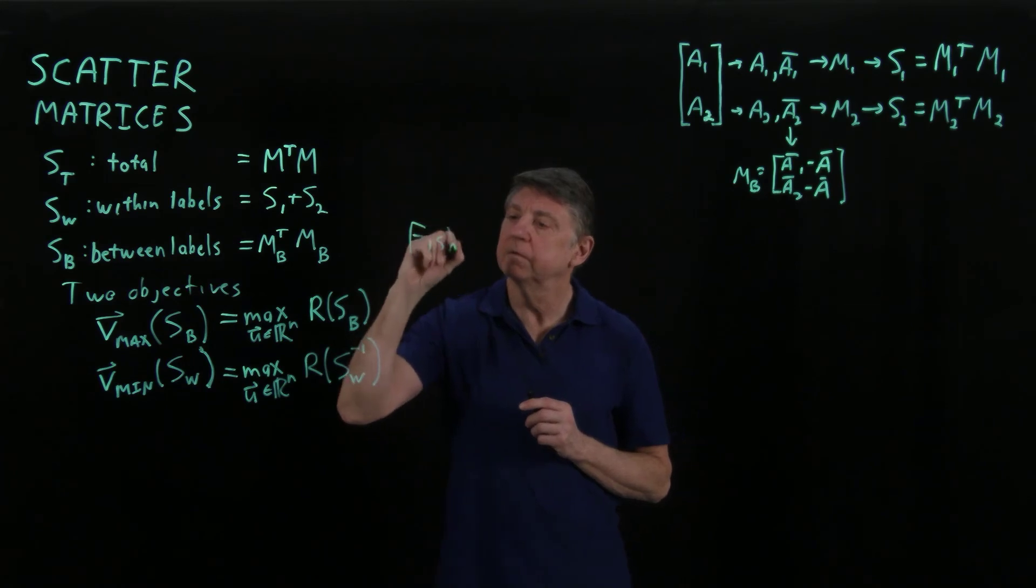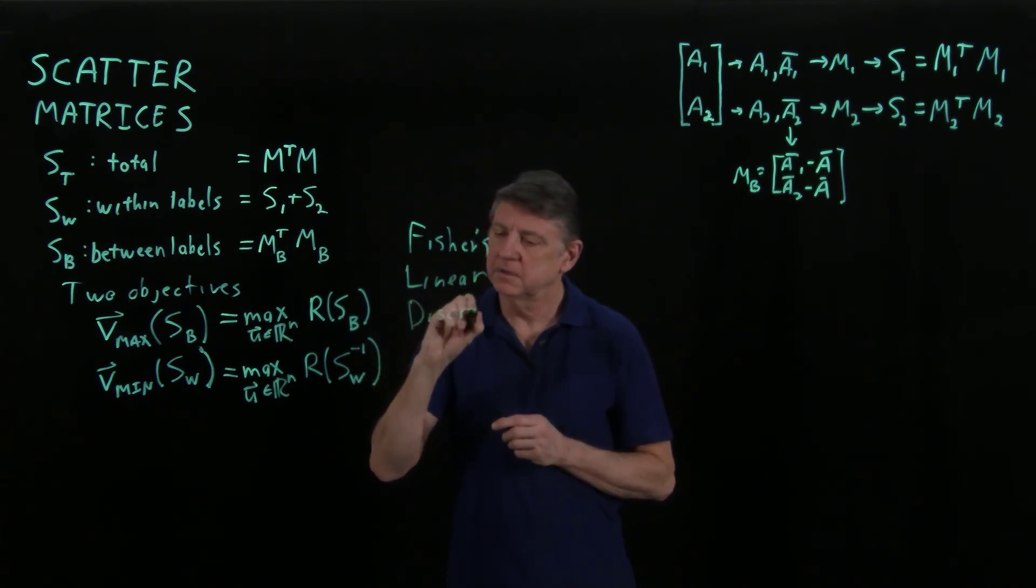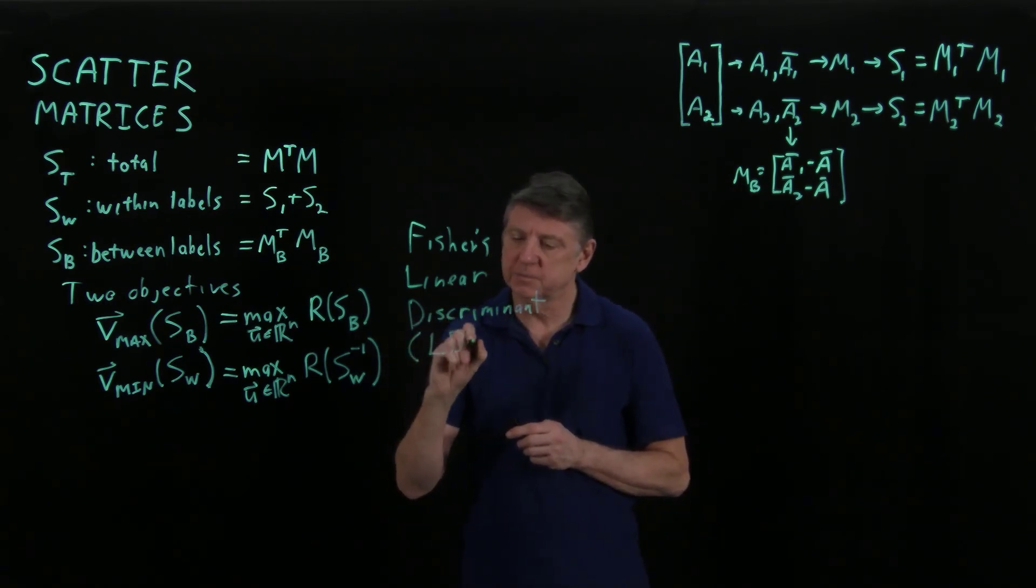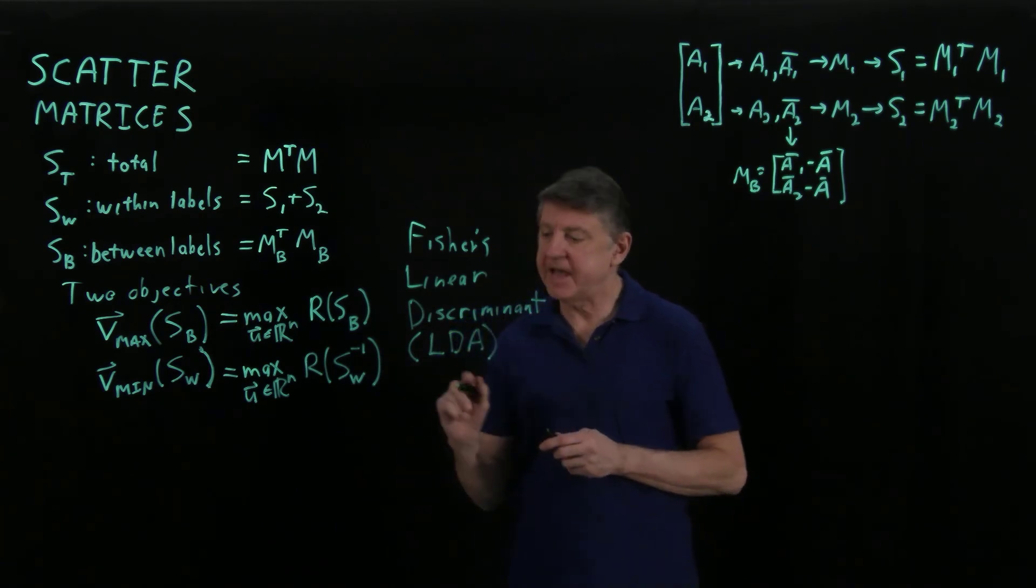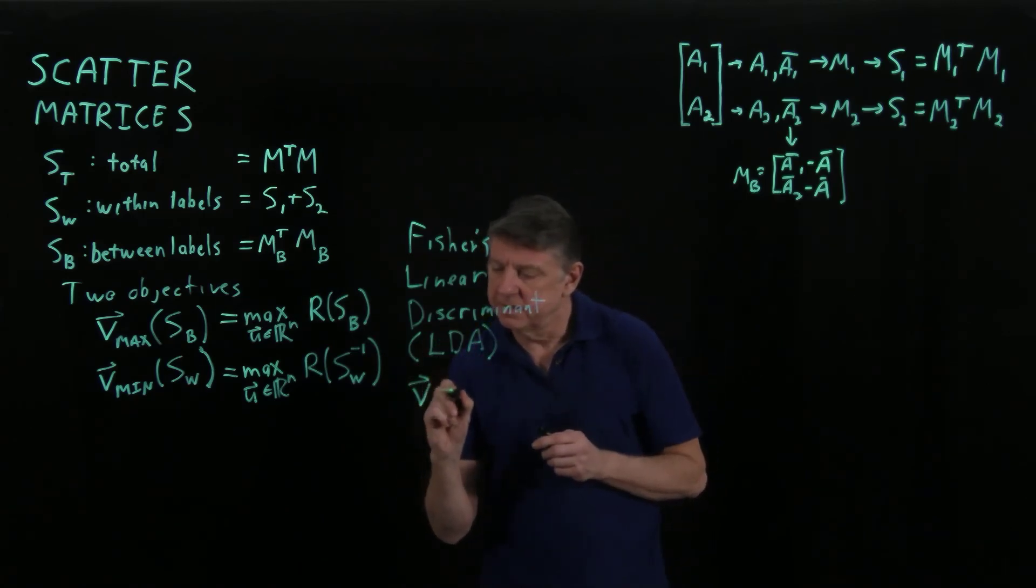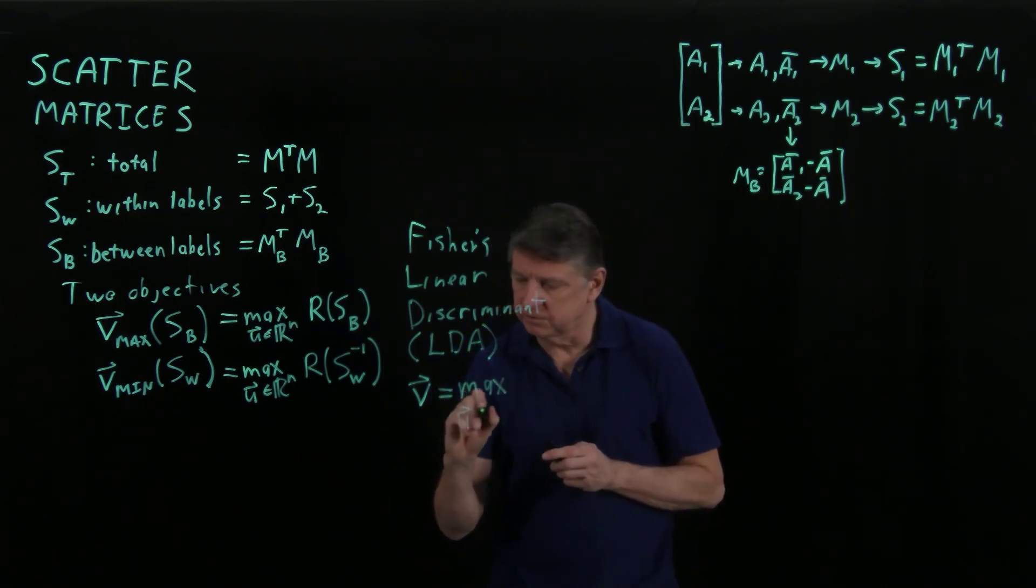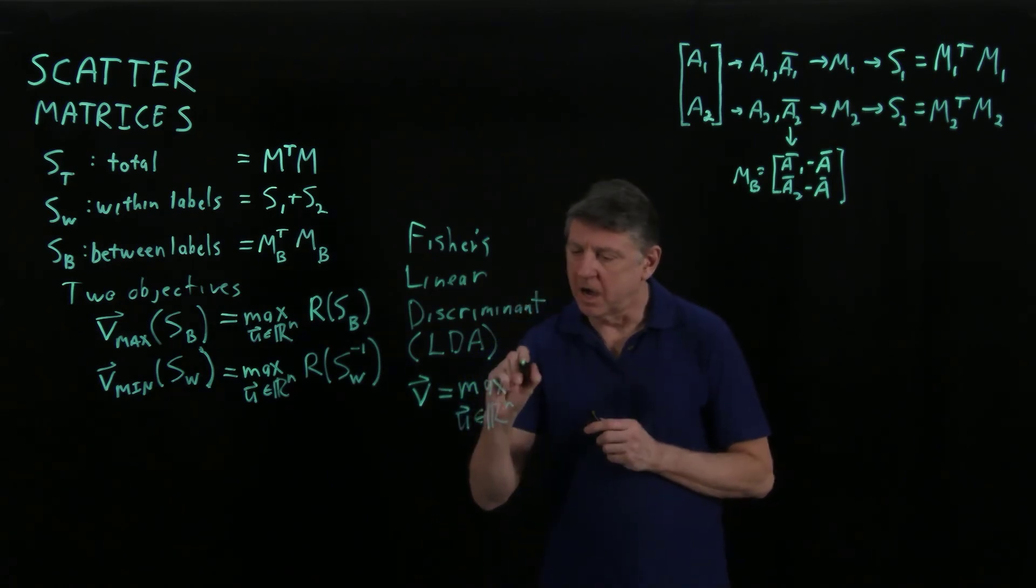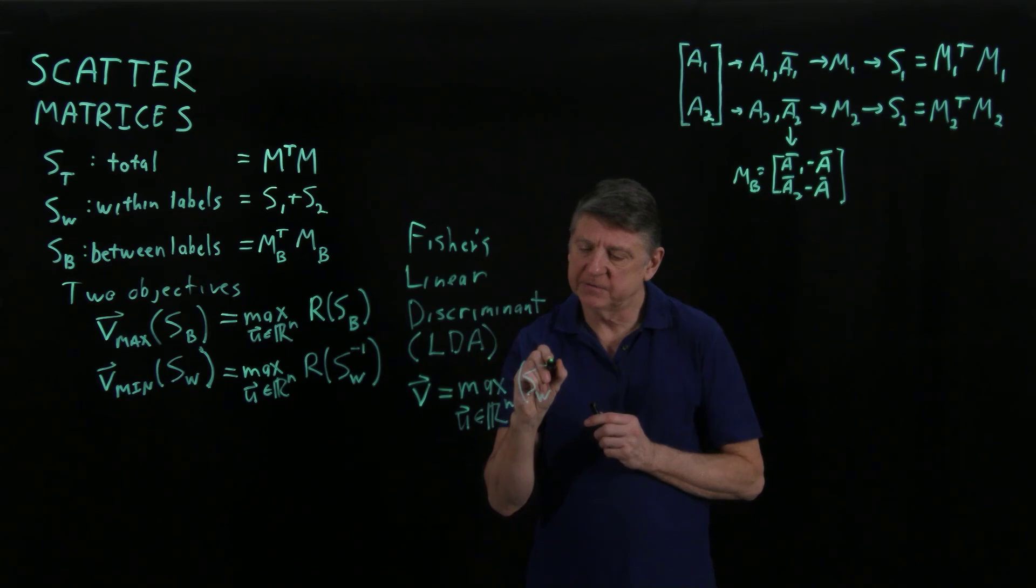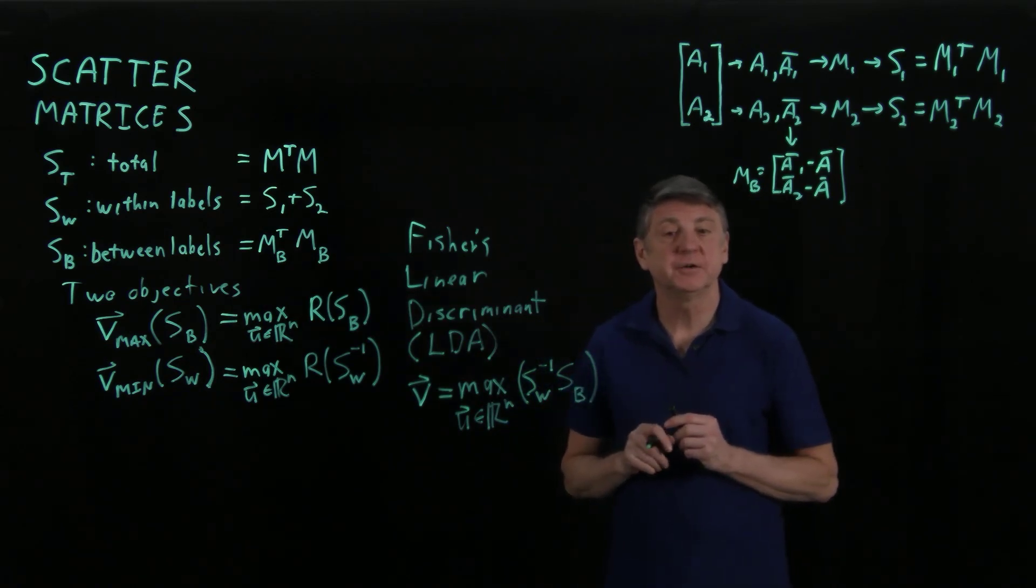So we have Fisher's linear discriminant, usually abbreviated as linear discriminant analysis. And that is, we want the vector, the unit vector, that is the maximum over all possible vectors of the product of these. So we take the within label scatter matrix, invert that, multiply it by the between label scatter, and we get Fisher's linear discriminant analysis.